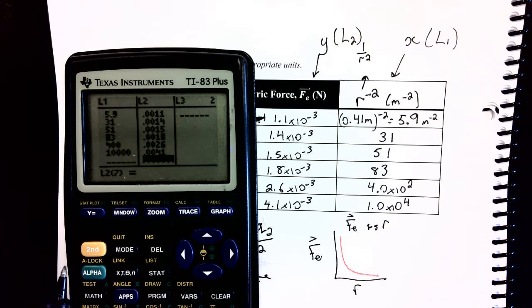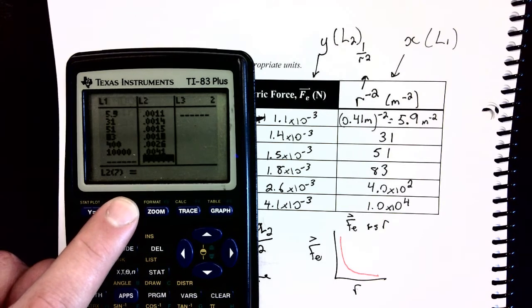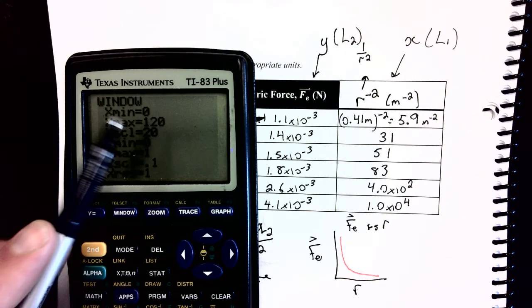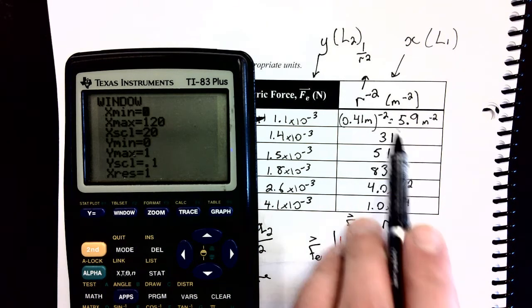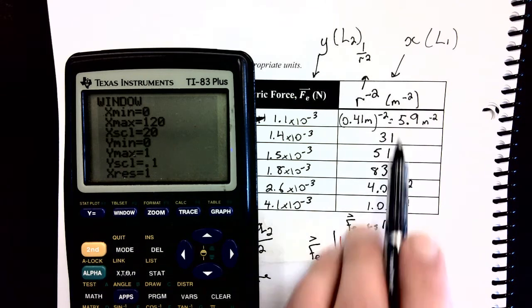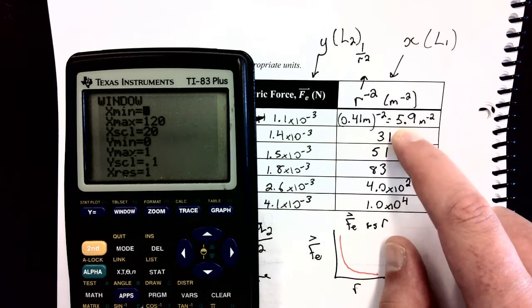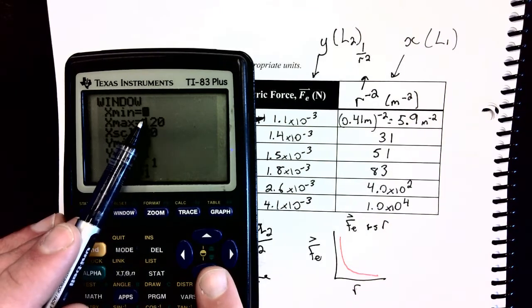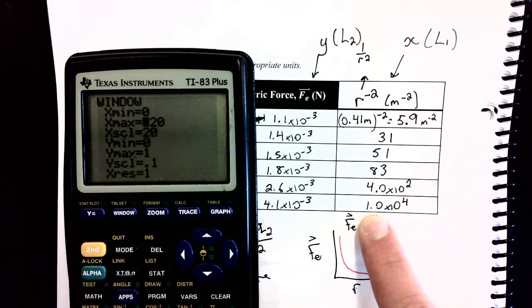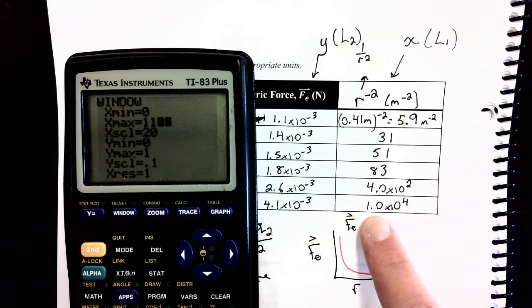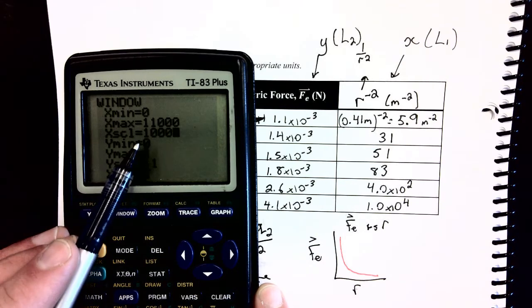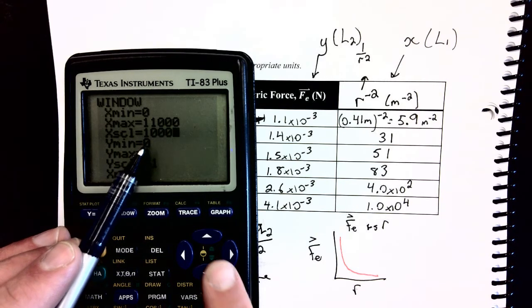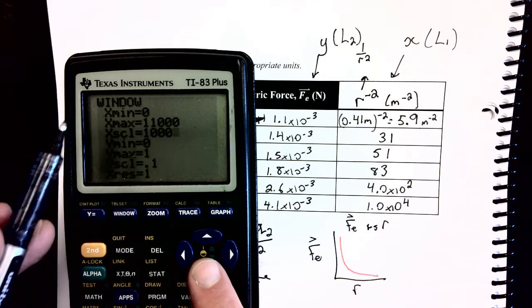And a good little thing to check is just that you entered all your data into your calculator properly. So my data is in my calculator. What I'll do now is I'll press the window button, and I want to pick a good window setting here. So my x values on my graph are going to be all of these r to the negative 2 values, and they're really quite a big spread. So I think my smallest one is 5.9. So maybe for my x minimum, 0 is fine. But my biggest one is 10,000. So maybe I'll go to like 11,000 as my maximum. Maybe I'll go up by thousands, because I've got quite a bit of data to fit in there on the x.